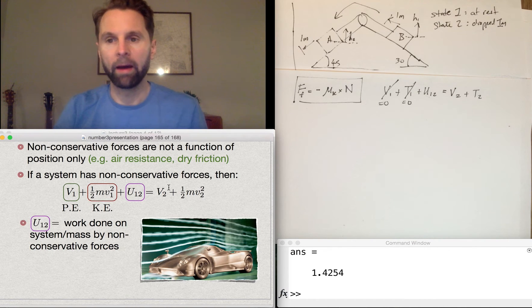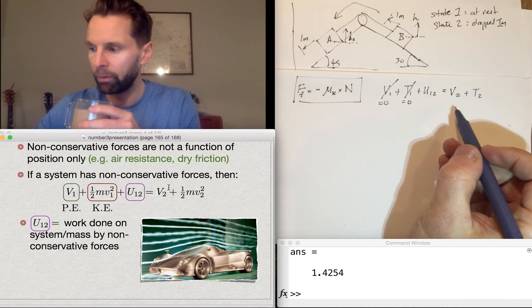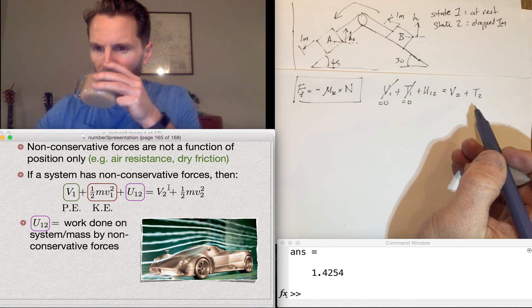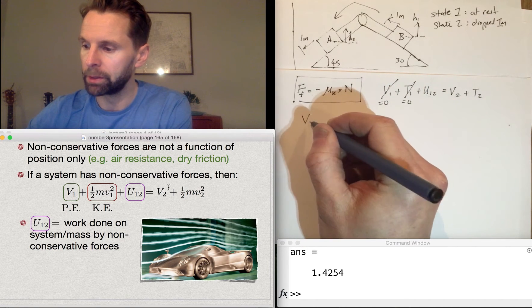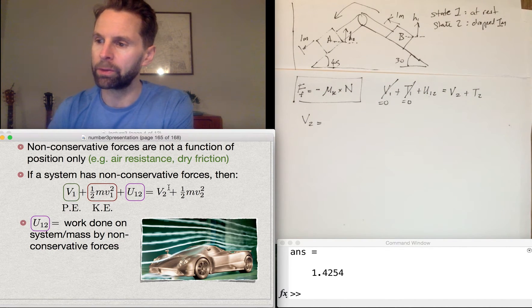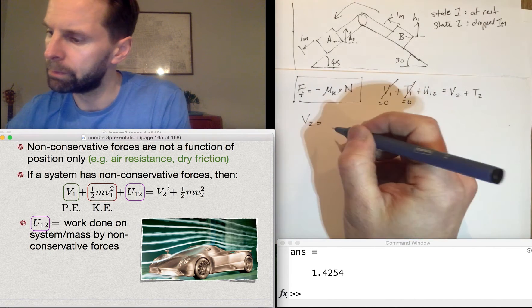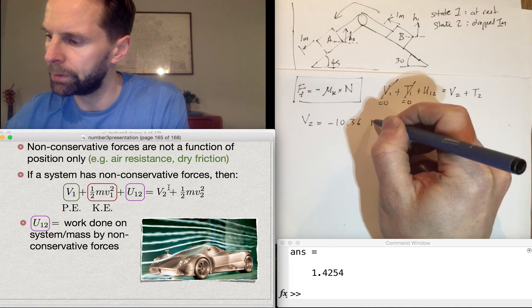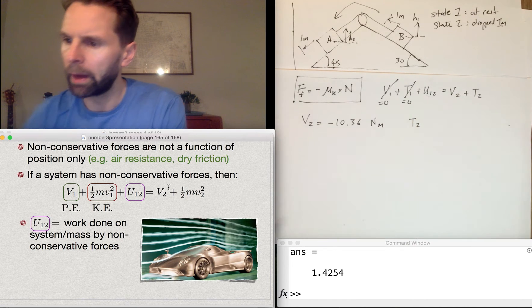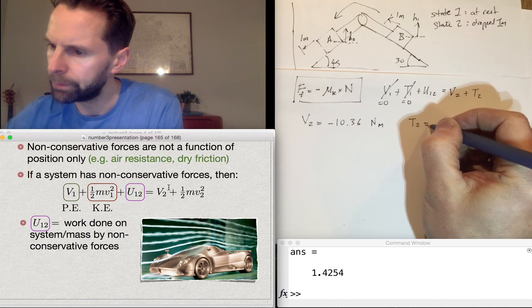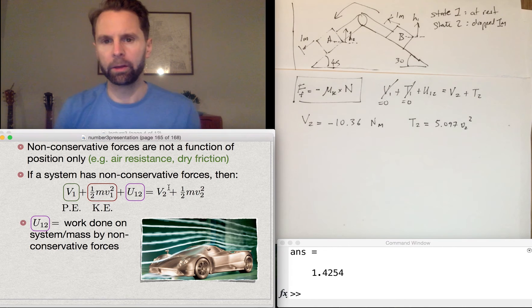So what we have to do now is find what U12 is. We've got V2 and T2 from the previous question. Because it's slid down one meter, the potential energy is going to be the same at state 2 as it was in the last question. It's minus 10.36 newton meters and T2 is equal to 5.097 V2 squared.